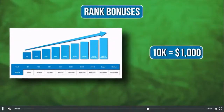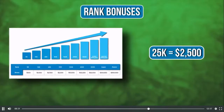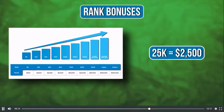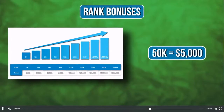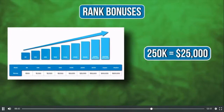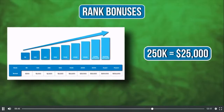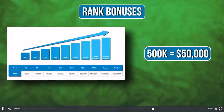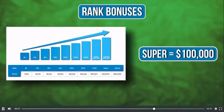We also have rank incentives and bonuses — a unique rewards program for MyDailyChoice leaders who develop a successful organization. Each time affiliates maintain their rank for 90 consecutive days, they receive a one-time bonus: 5K affiliate is $500, 10K affiliate is $1,000, 25K affiliate is $2,500, 50K affiliate is $5,000, 100K affiliate is $10,000, 250K affiliate is $25,000, 500K affiliate is $50,000, super affiliate is $100,000, and master affiliate — the top rank — is $500,000.